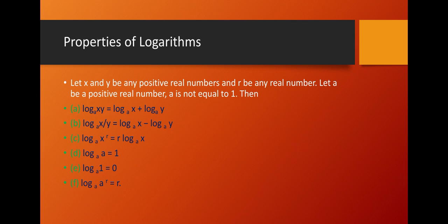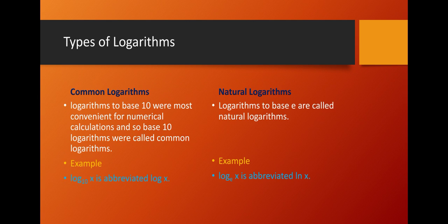If there is log base a of a raised to power r, it equals r, because log base a of a equals 1 and r becomes the coefficient. So it equals r. Here are the types of logarithms — there are basically two types: common logarithms and natural logarithms.